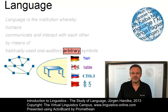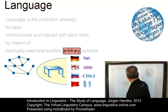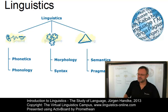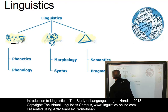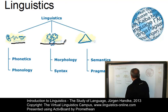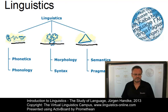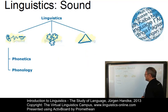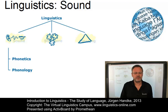So much for a definition of language. Let us now briefly look at how linguists study language. The field of linguistics is subdivided into three central branches: a branch that deals with sound, a branch that deals with structure, and a branch that deals with meaning. The sound branch is subdivided into two central areas: phonetics and phonology.